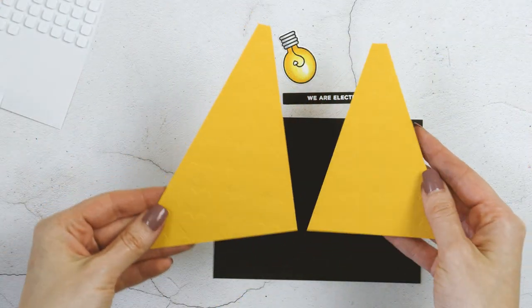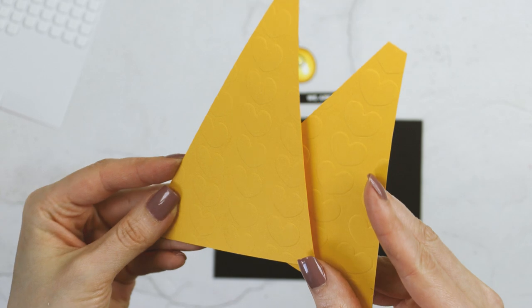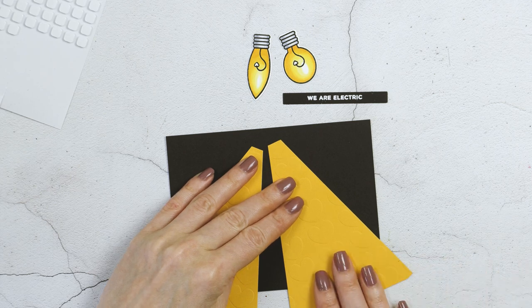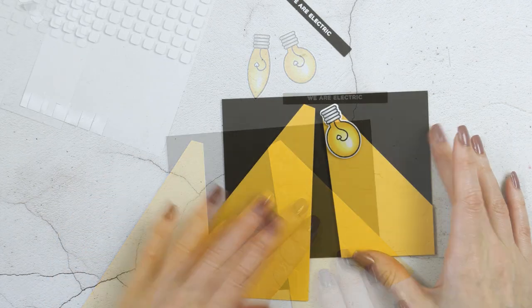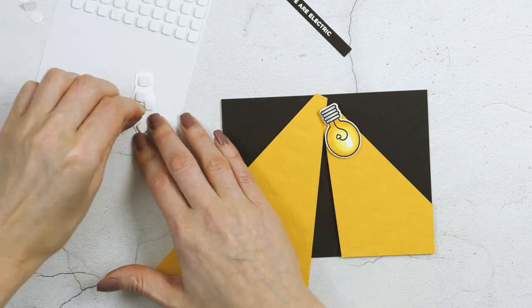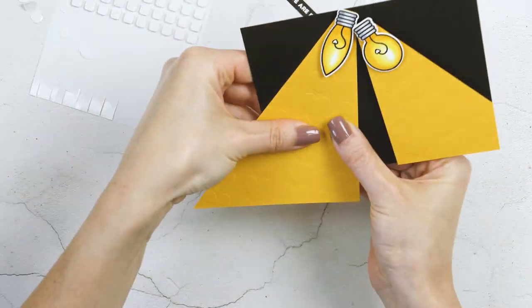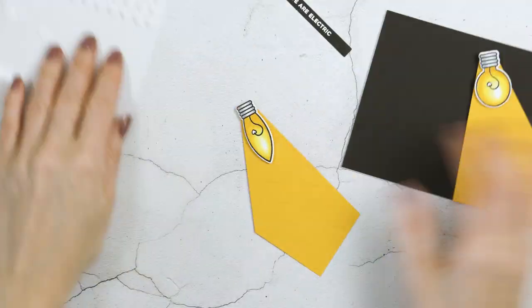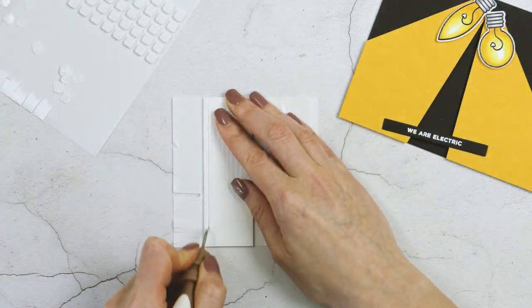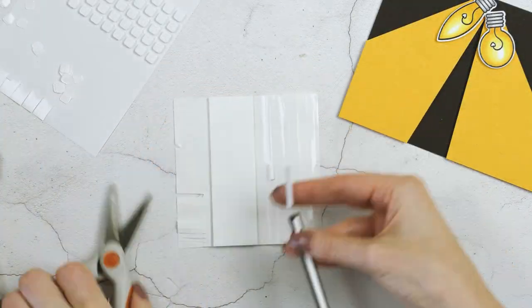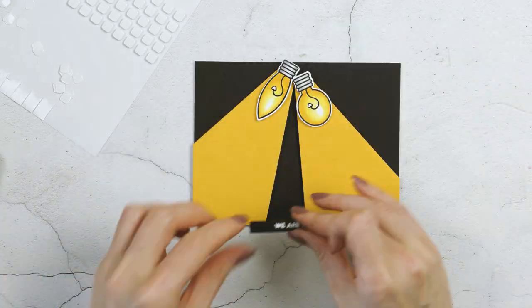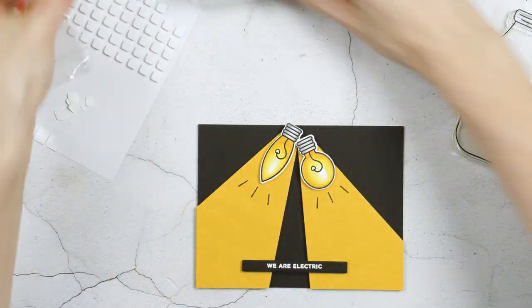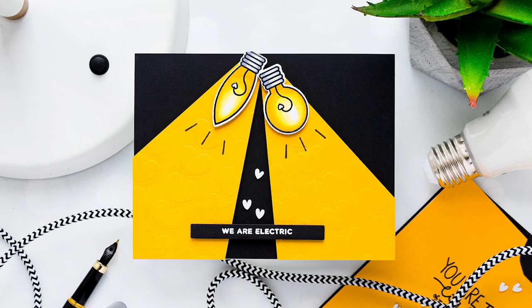For this last card I added two panels of light as I wanted to incorporate the we are electric sentiment and that implies having more than one light bulb and thus more than one ray of light. I dry embossed both panels using the hearts stencil again simply to add some fun texture and foam mounted both the rays of light and the light bulbs onto the card. As for the sentiment I used a foam adhesive strip. This was just easier than adding foam adhesive squares and foam mounted it over both of the light rays. I then stamped the black lines to finish this card up and added the white plastic hearts.